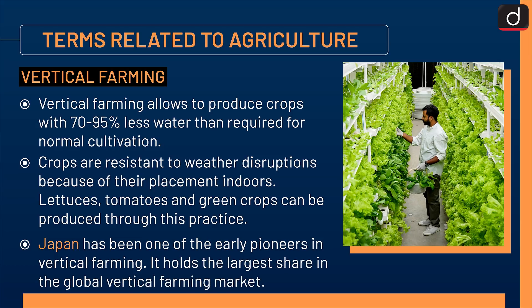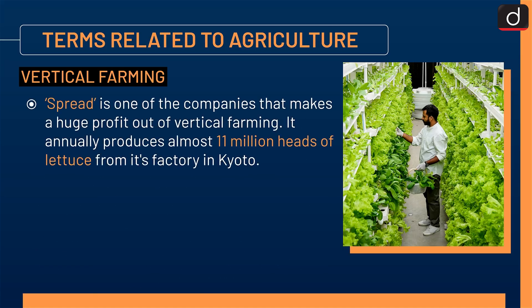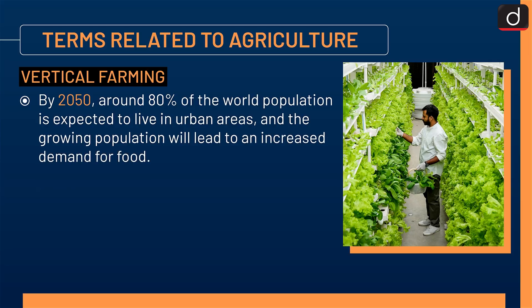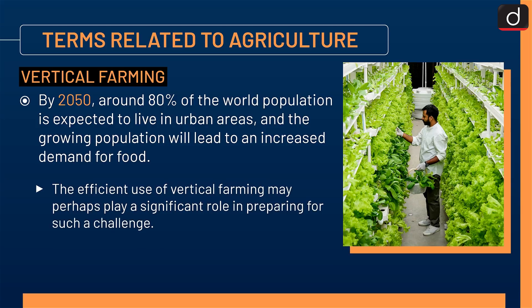Japan has been one of the early pioneers in vertical farming and holds the largest share in the global vertical farming market. Spread is one of the companies that makes a huge profit from vertical farming, annually producing almost 11 million heads of lettuce from its factory in Kyoto. Countries like Denmark and the USA are also taking up vertical farming. By 2050, around 80% of the world population is expected to live in urban areas, and the efficient use of vertical farming may play a significant role in meeting that challenge.